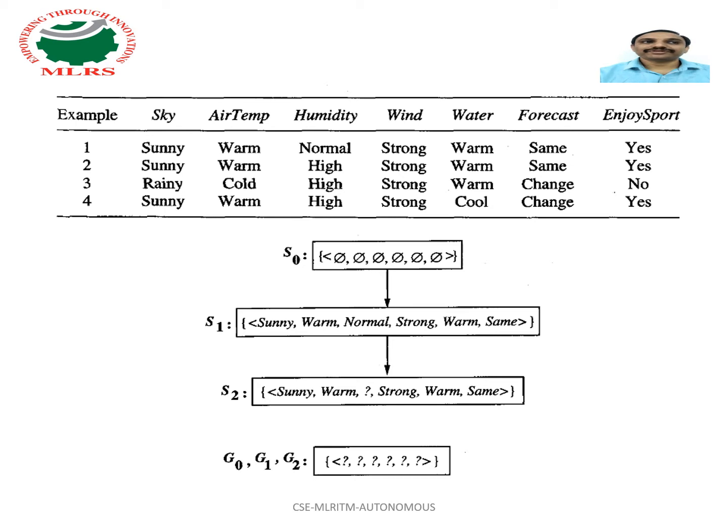For the remaining three attributes—wind, water, forecast—their values are not changed, so we are leaving them unchanged. In the case of S2, we made only one change: normal was converted to a question mark.